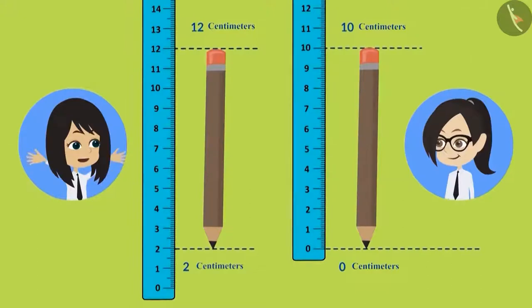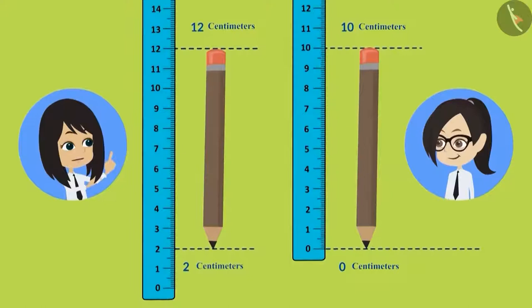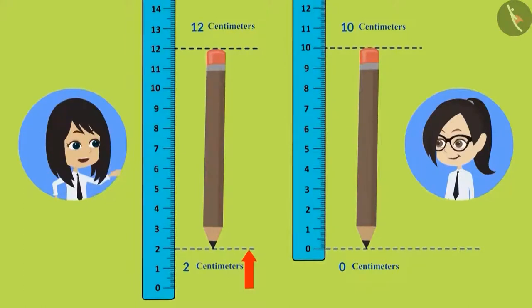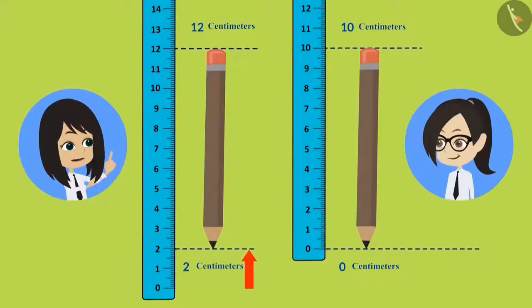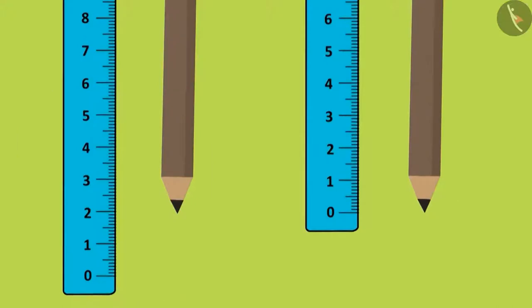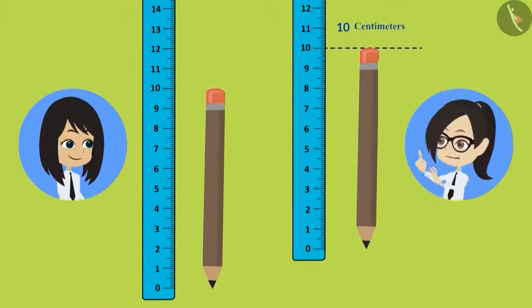I understand now. The problem with keeping the pencil at 2 centimeters is that there is no pencil from 0 centimeters to 2 centimeters, and I included that length as well in the measurement. Now I will correct it. I will keep the pencil at 0 centimeters.